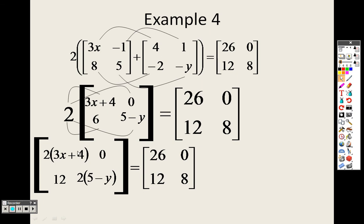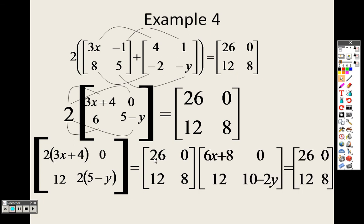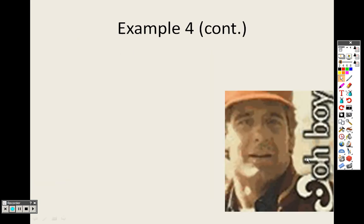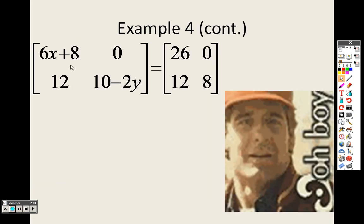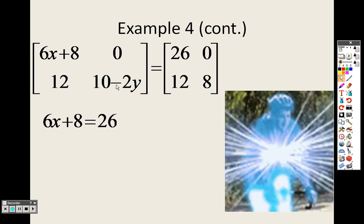This item equals 26. So when I distribute that through, 2 times 3 is 6x, 2 times 4 is 8. 2 times 5 is 10, 2 times negative y is negative 2y. I can literally now set this equal to 26 and solve. So 6x plus 8 equals 26. This equals 8. So now I can sit there and solve each of those.